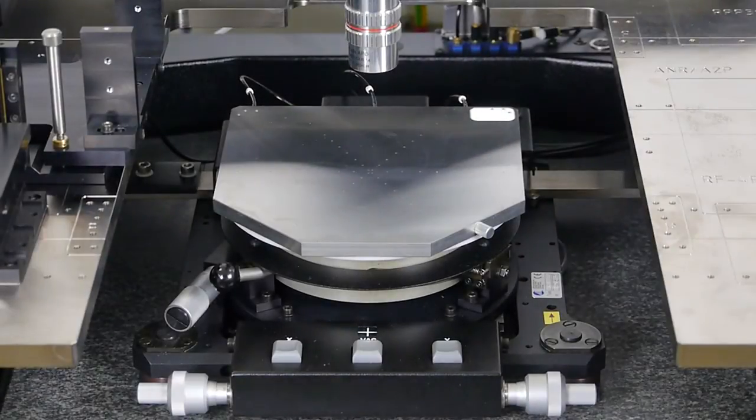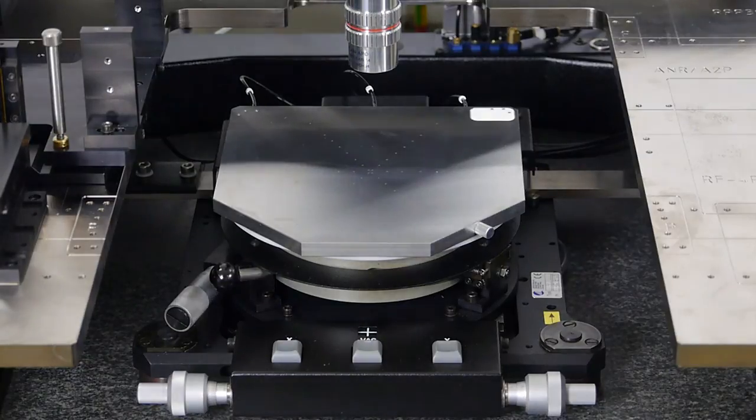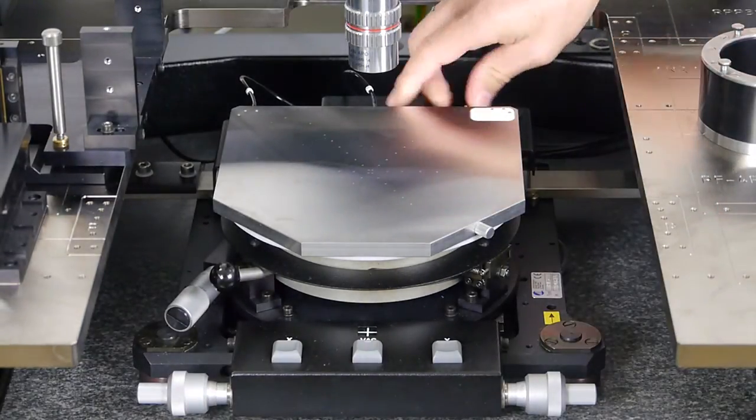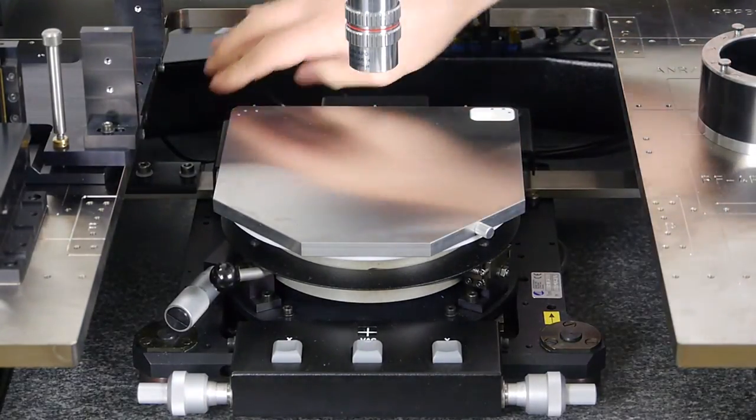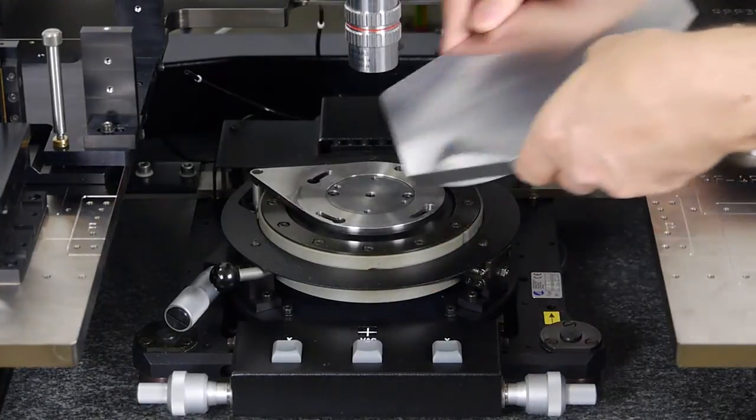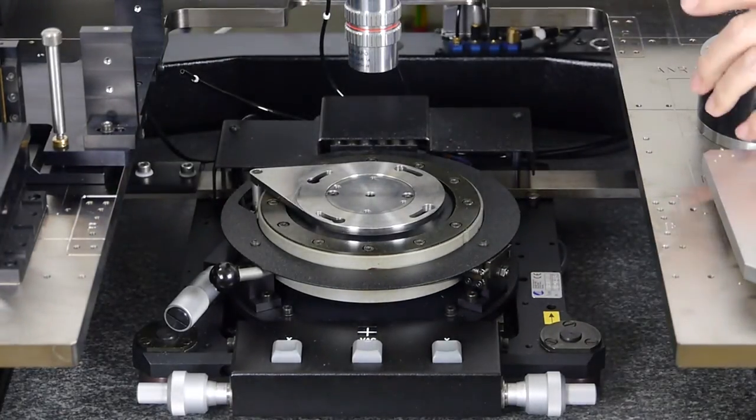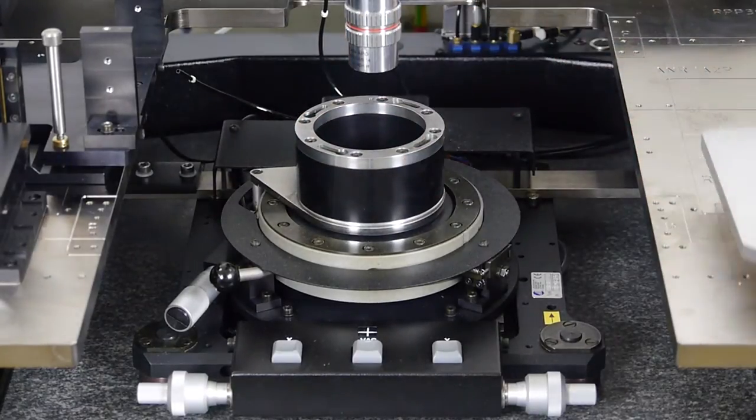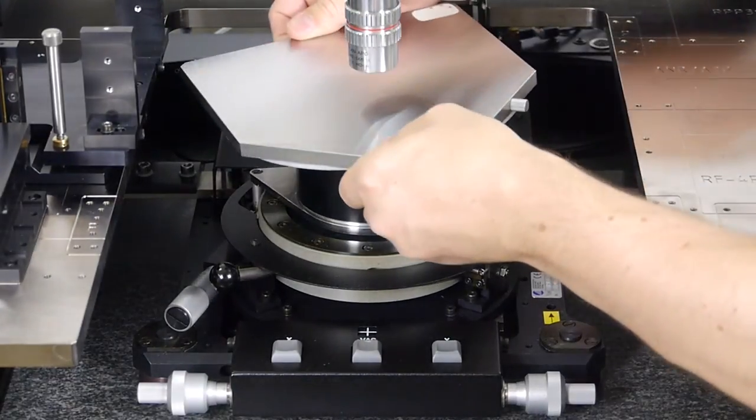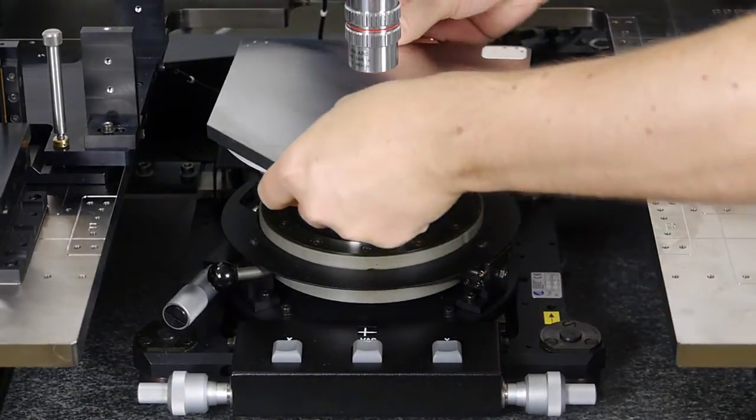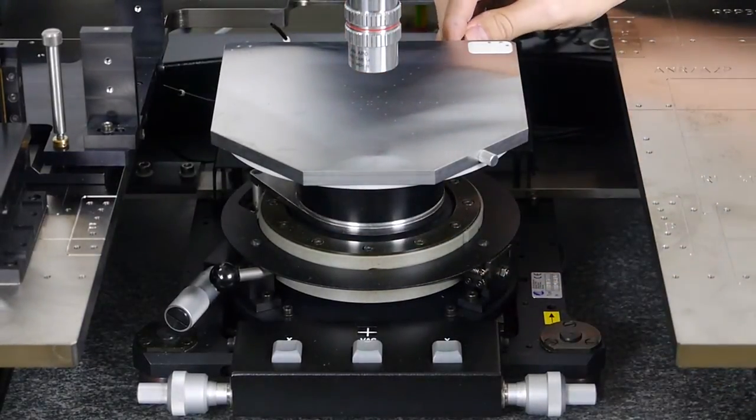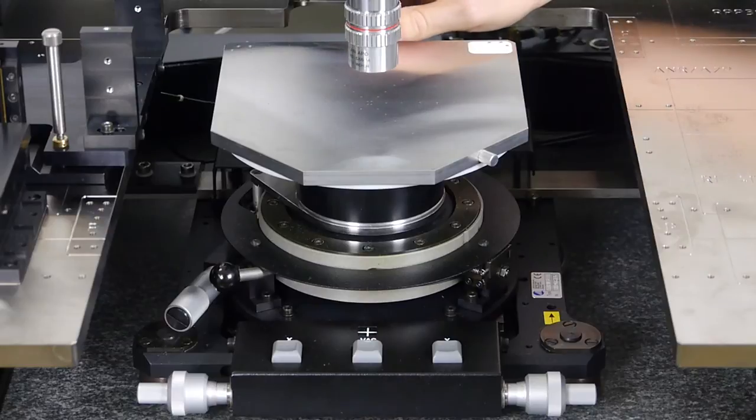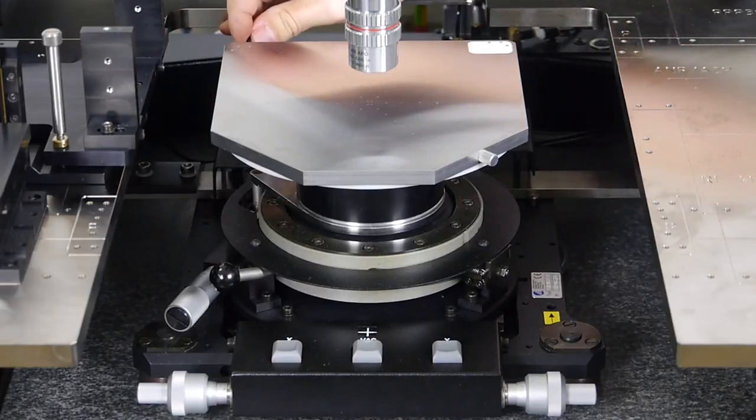We start with the mounting of the chuck raiser under the chuck. The stage offers a very easy Bayonet system for this, so no tools needed to mount it. Finally, connect the vacuum tubes for the main and auxiliary chuck vacuum. That was easy.